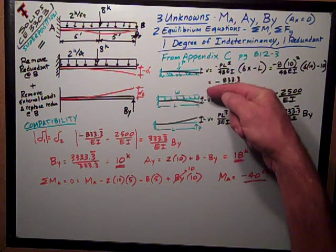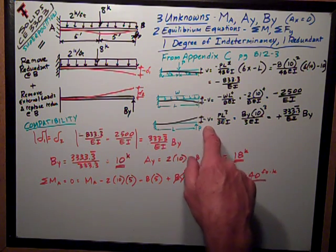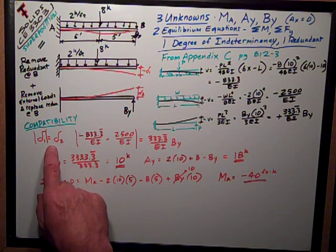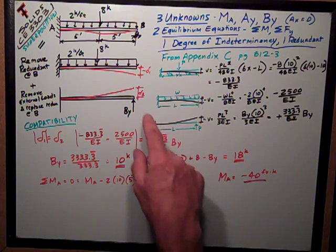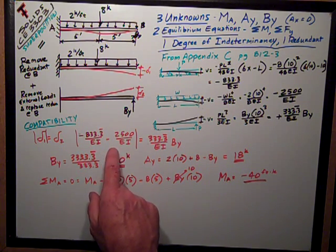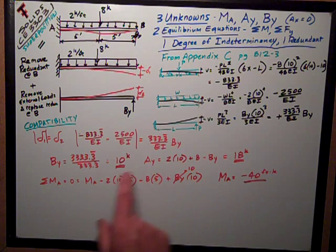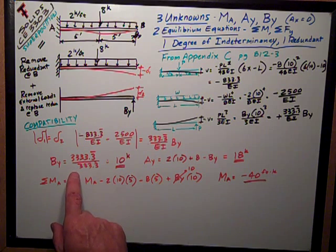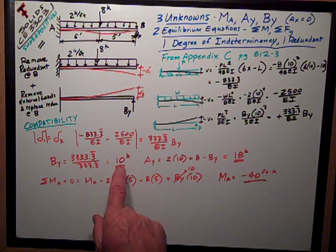Now, I just want to say that these two deflections added together have got to be equal and offset by this deflection. So, delta 1, the sum of these two, is equal to the absolute value of delta 2, the deflection due to the redundant force. Negative 833.3 minus 2500 equals 333.3 By. By is equal to the sum of these two numbers divided by 333.3. 3's are wild. That's equal to 10 kips.